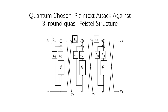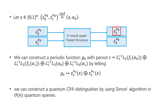We first give a quantum chosen plaintext attack against the three-round quasi-Feistel structure. The inputs are z0 and z1, and the corresponding outputs are z3 and z4. The process is shown in this figure. We can construct a periodic function g4 with period s, based on z3. So we can construct a quantum CPA distinguisher by using Simon's algorithm in polynomial quantum queries.